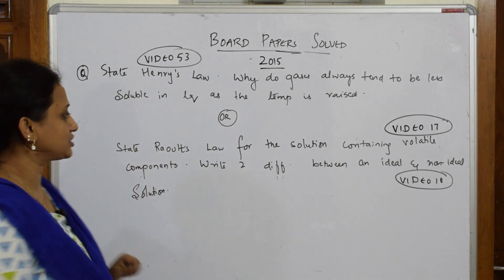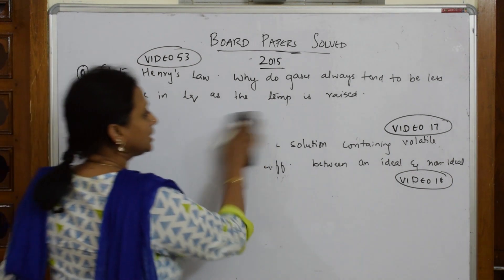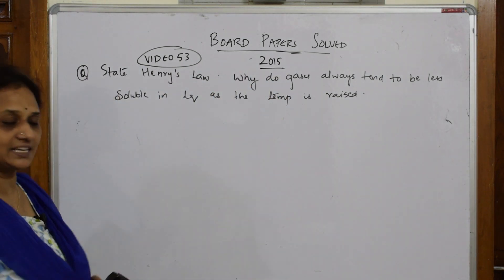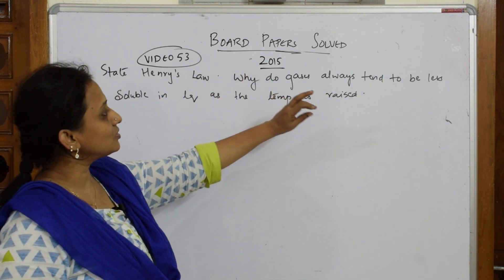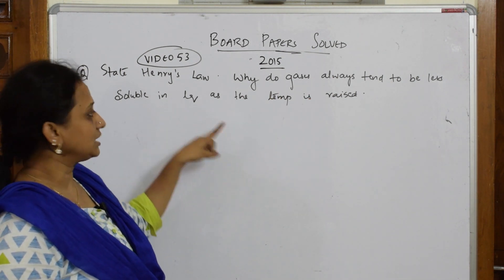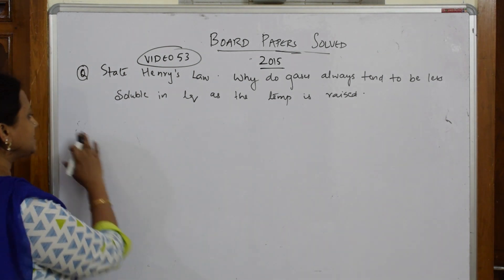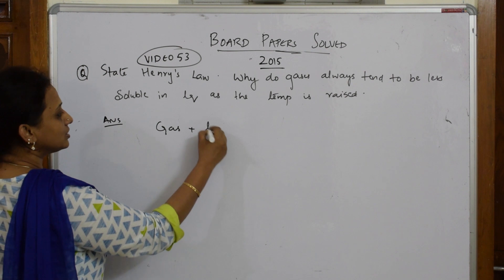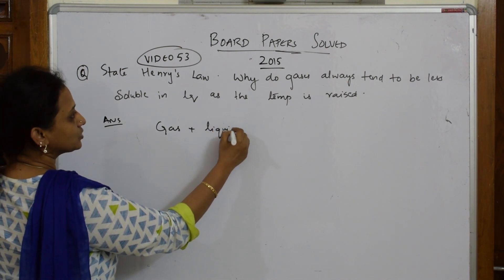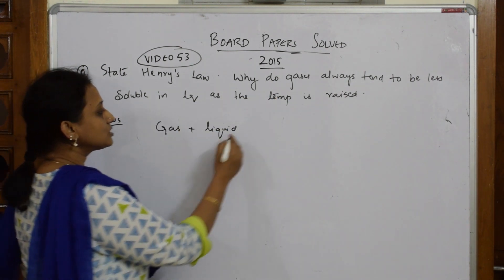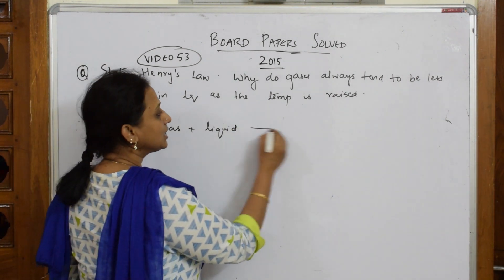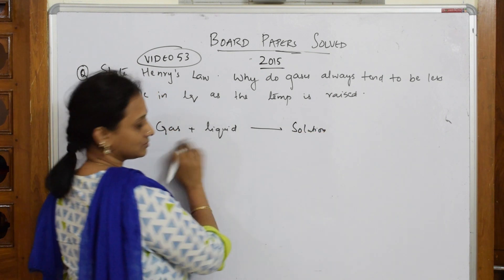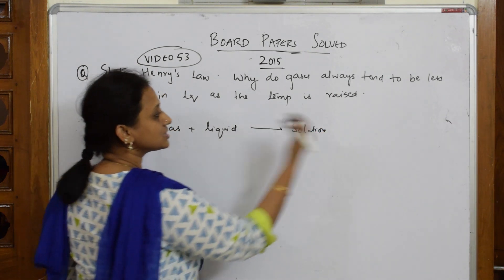Now let's come back and explain this question clearly — just see how to write it in the exam. The question is: why do gases always tend to be less soluble in liquid when the temperature is raised? When a gas is dissolved in a liquid, it forms a solution.